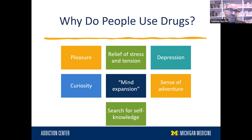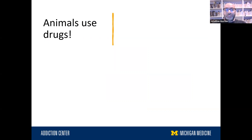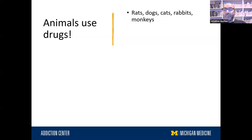This is probably how most people think of addiction and addictive drug use, and that was the feeling in the field up until around the fifties, when people started to question this explanation. The reason people started to question it was experiments that showed that animals use drugs — a lot of different animals: rats, dogs, cats, monkeys. They use the same drugs that we do.